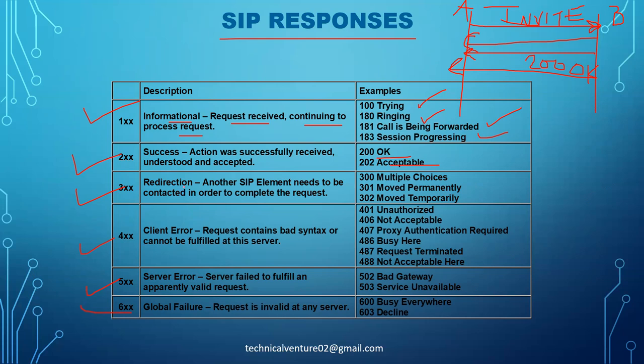3xx messages are mainly used for redirection — when a user agent needs to redirect to another user agent. Examples include 300 Multiple Choices, 301 Moved Permanently, and 302 Moved Temporarily, sent according to the specific need.